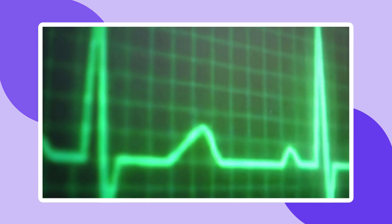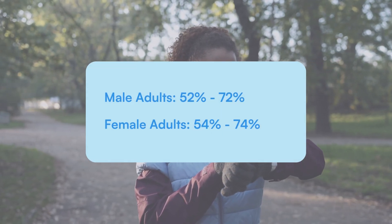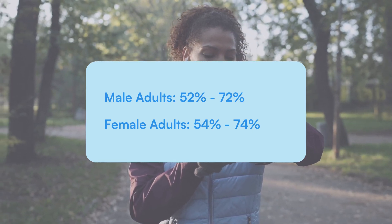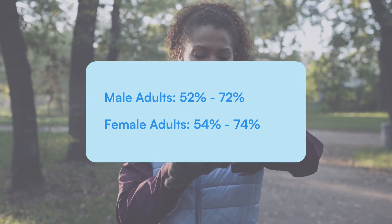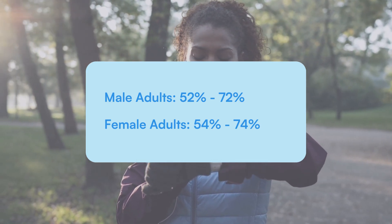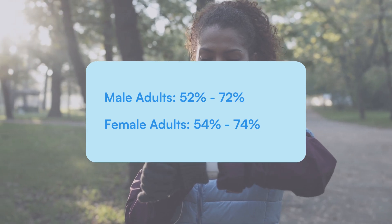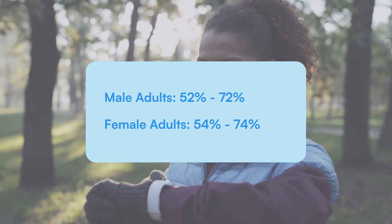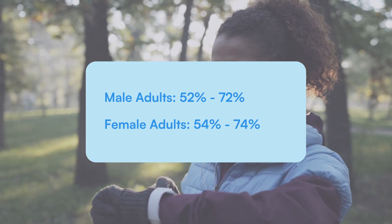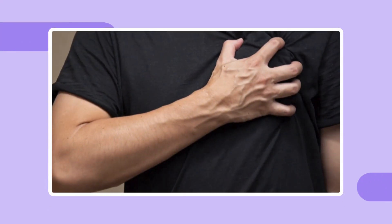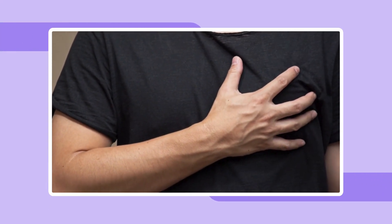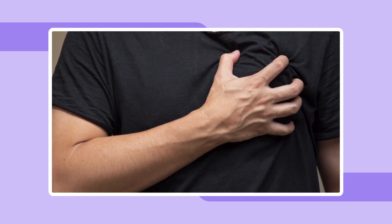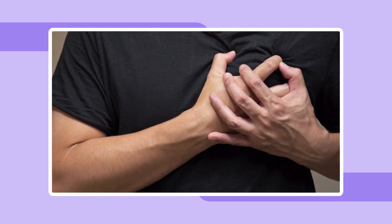A normal ejection fraction typically falls between 52-72% for male adults and 54-74% for female adults, indicating efficient heart function. Our template includes a chart that breaks down this normal range across various age brackets, recognizing that acceptable values may vary. This chart is essential for interpreting individual ejection fraction measurements in the context of age-related norms.